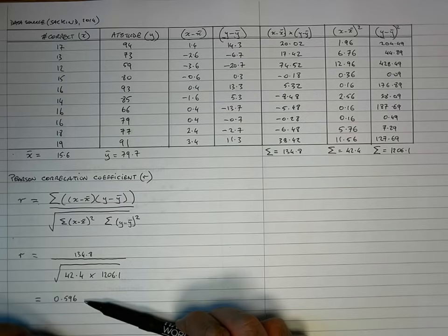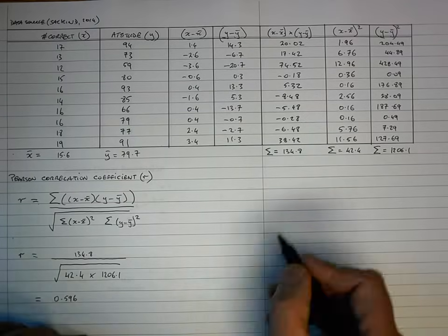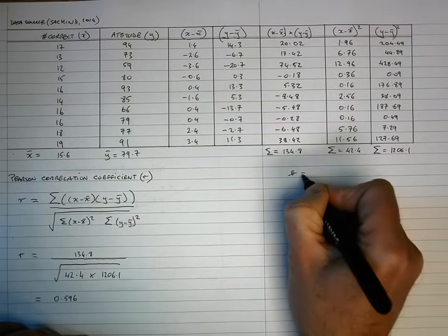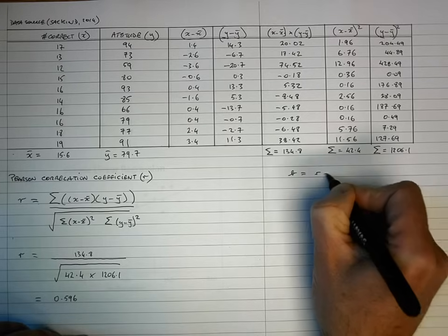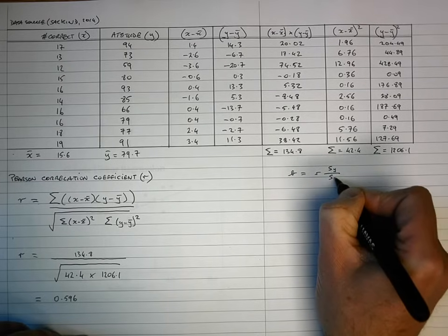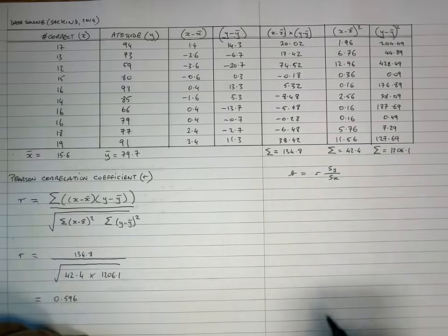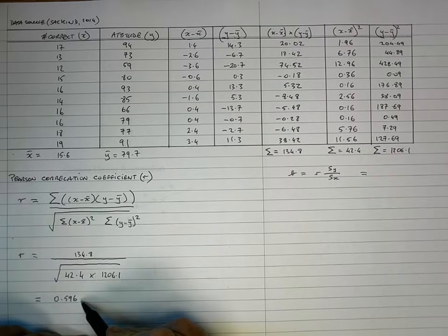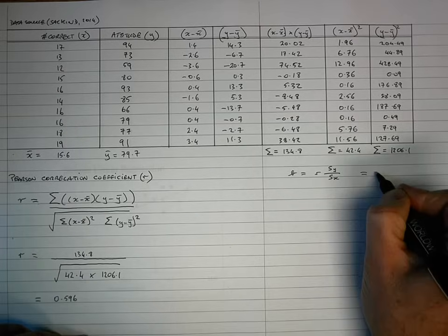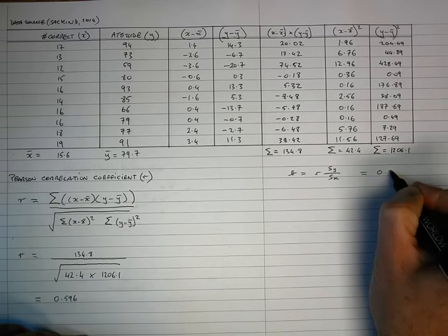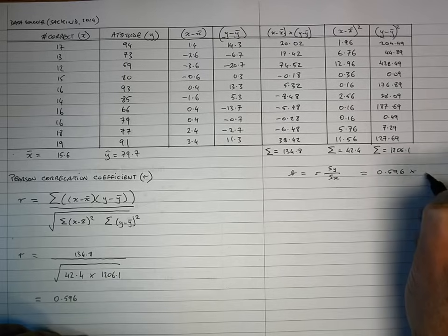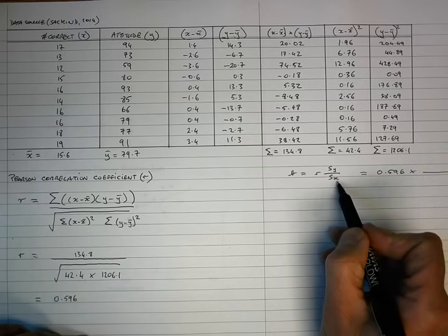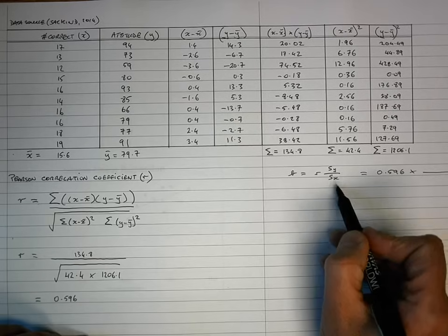So now I'm ready to start my calculations for linear regression. The first thing I need is the formula for my slope, designated by b, which is equal to R times the standard deviation of y, divided by the standard deviation of x. We can plug in the value of R straight away — that's 0.596, which we've already calculated. Now let's figure out the two standard deviations.